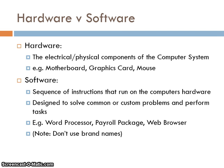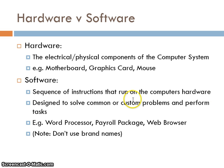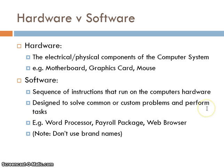Software is the sequence of instructions that run on the computer's hardware. To be more technical, you could say the sequence of instructions that execute on the computer's hardware. Software is designed to solve common or custom problems and perform tasks — it is software that you use with your hardware.